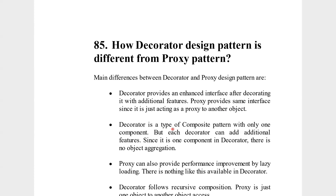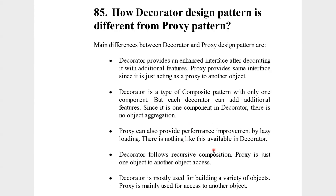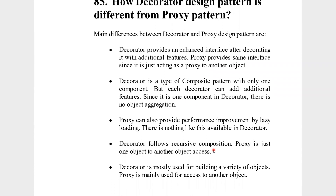The decorator is a type of composite pattern — it has only one component, but each decorator can add additional features. There is no object aggregation in a decorator since we are using only one component. The proxy can provide performance improvement through lazy loading, because you can initiate things only when you actually want them. The proxy takes care of fetching objects when needed, while with a decorator you have to do it explicitly. The decorator provides recursive composition, while the proxy gives one object access to another object.